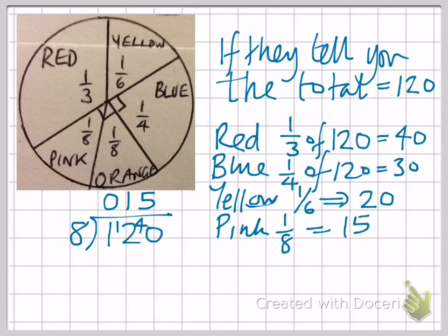As I said, orange would be the same if we were to work that out. And if you add up all of those, including the orange, it should make the 120 children that you started with.